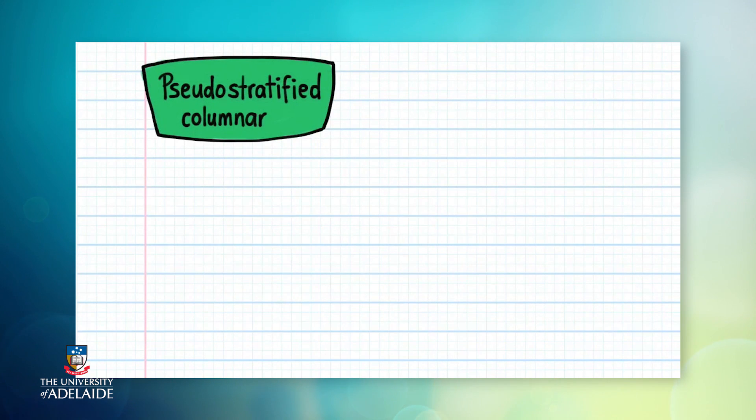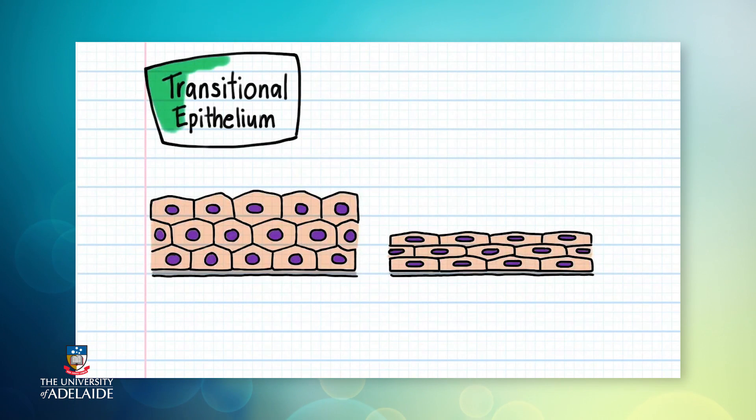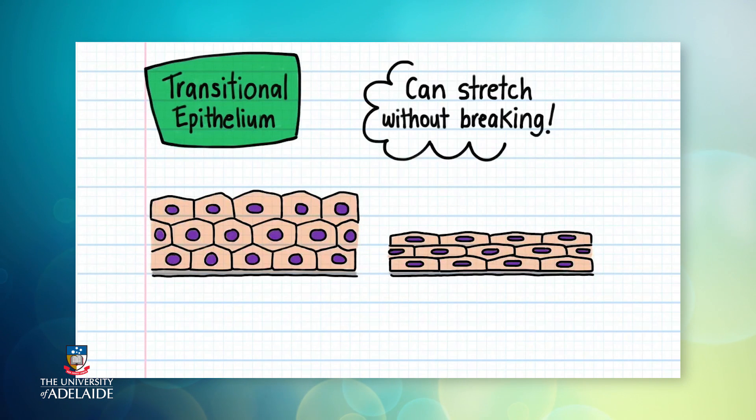Finally, let's look at transitional epithelium. Transitional epithelium is a special type of stratified epithelium that can stretch without breaking. Transitional epithelium is found in the bladder because the bladder has to stretch as it fills with urine.